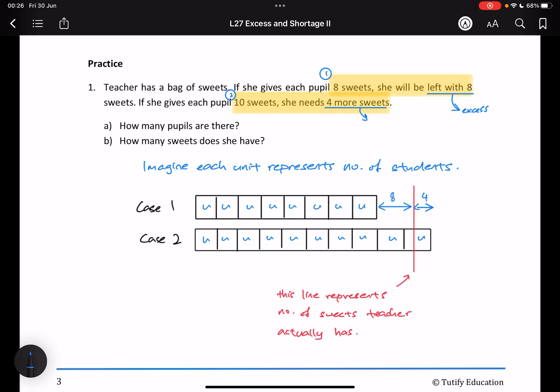So, immediately from the model, we know that two units represents twelve. Two units equals to twelve. One unit equals to six. And you can find, well, how many students are there? There's six students.